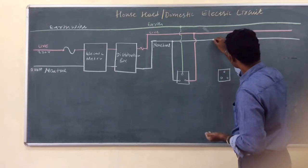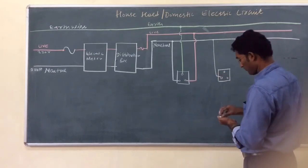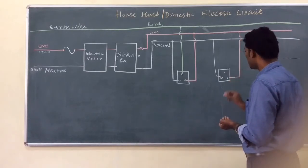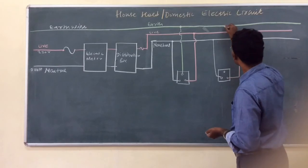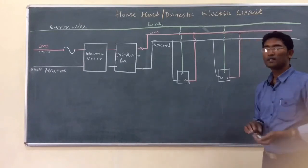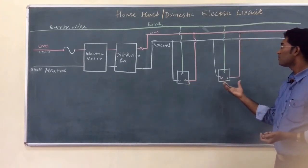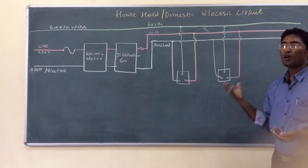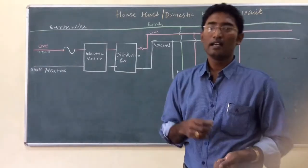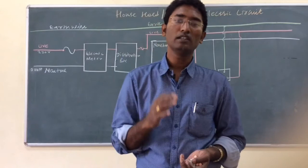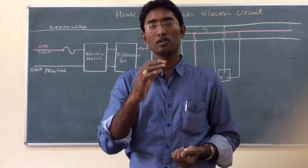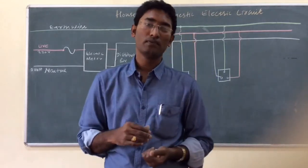For another switch, the neutral wire is connected to one terminal, the live wire to another, and the earth wire to the third. In this way, many switches and appliances like fans or TVs can be connected. In a domestic electric circuit, all appliances are connected in parallel.